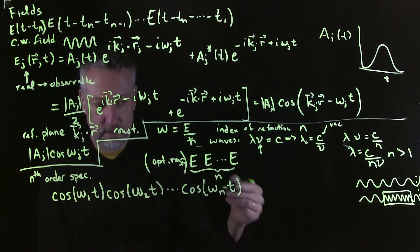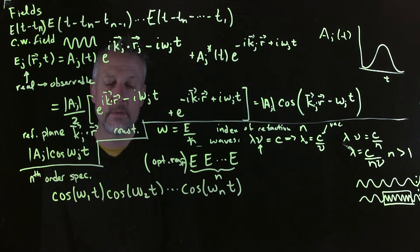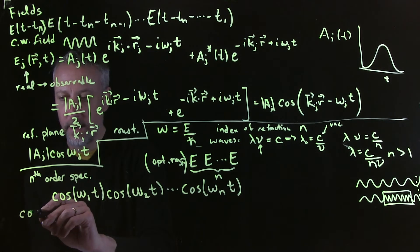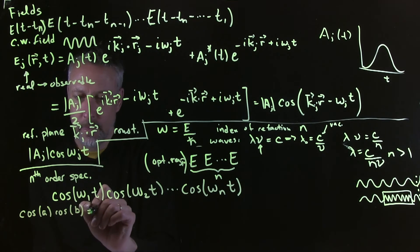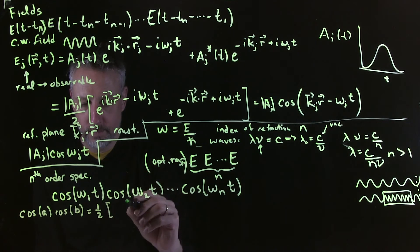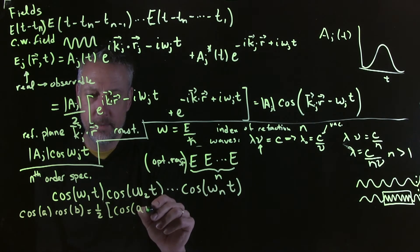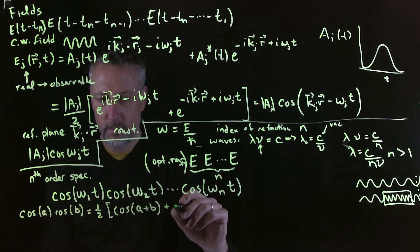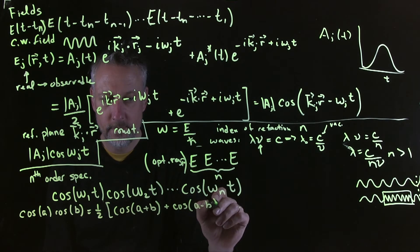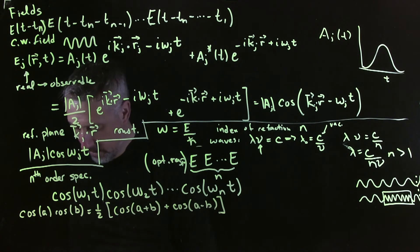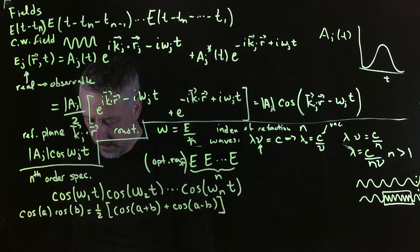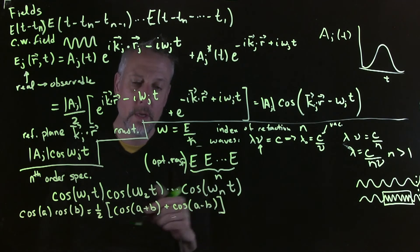And what this allows us to do is to think about what happens when we multiply, for example, cosines by each other. This is why I warned you that you might want to dust off your trigonometric identities. So if I have, for example, cosine A times cosine B, this is equal to one-half cosine A plus B plus cosine A minus B. And notice, of course, since cosine is even, whether A or B is bigger or smaller doesn't matter.